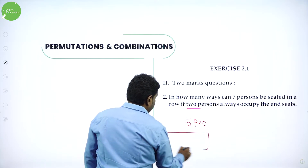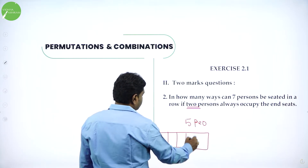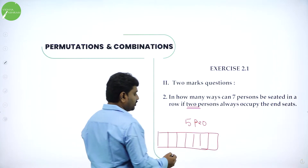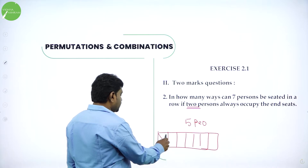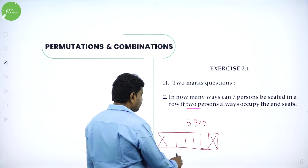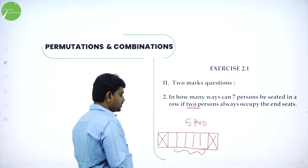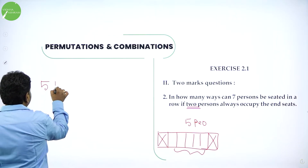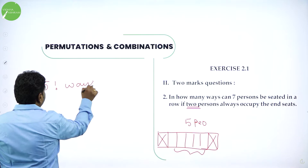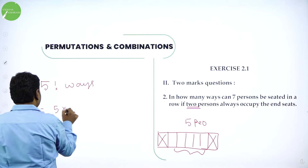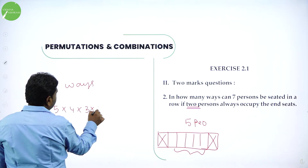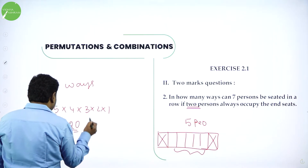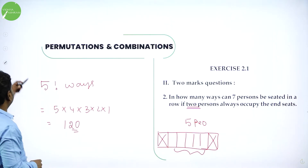If I take 7 boxes, 7 people can be arranged in 7 boxes. But the ends are occupied by 2 people, so I am left with 5 places and 5 people. The answer is 5 factorial ways: 5 into 4 into 3 into 2 into 1 equals 120. So 120 different ways we can arrange.